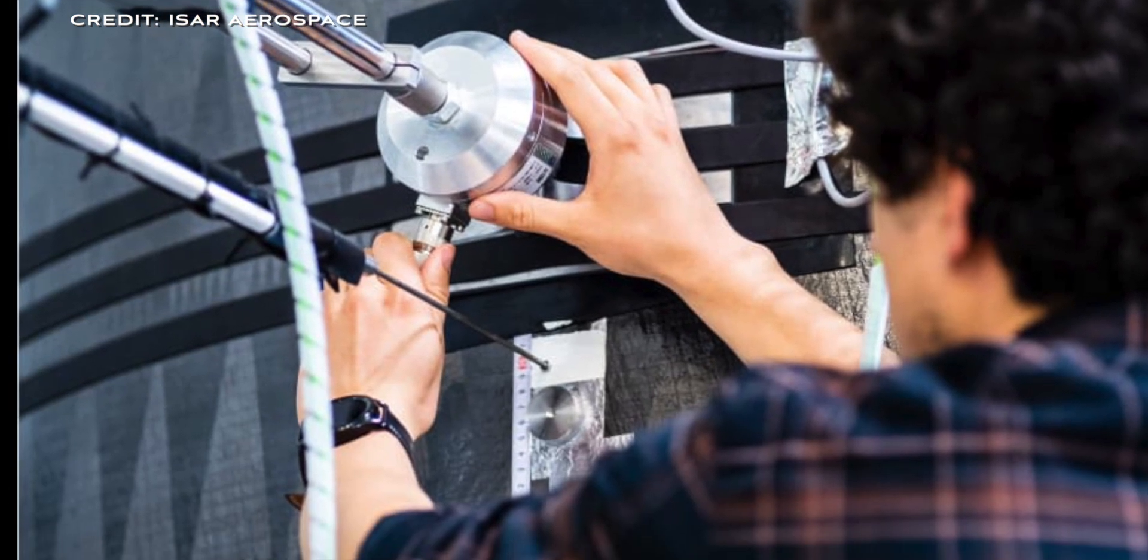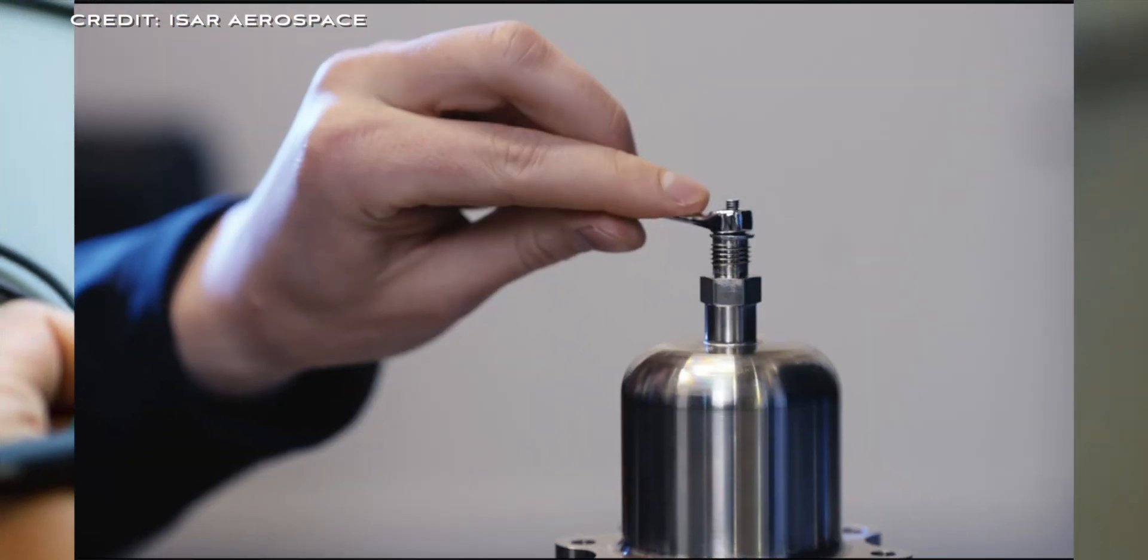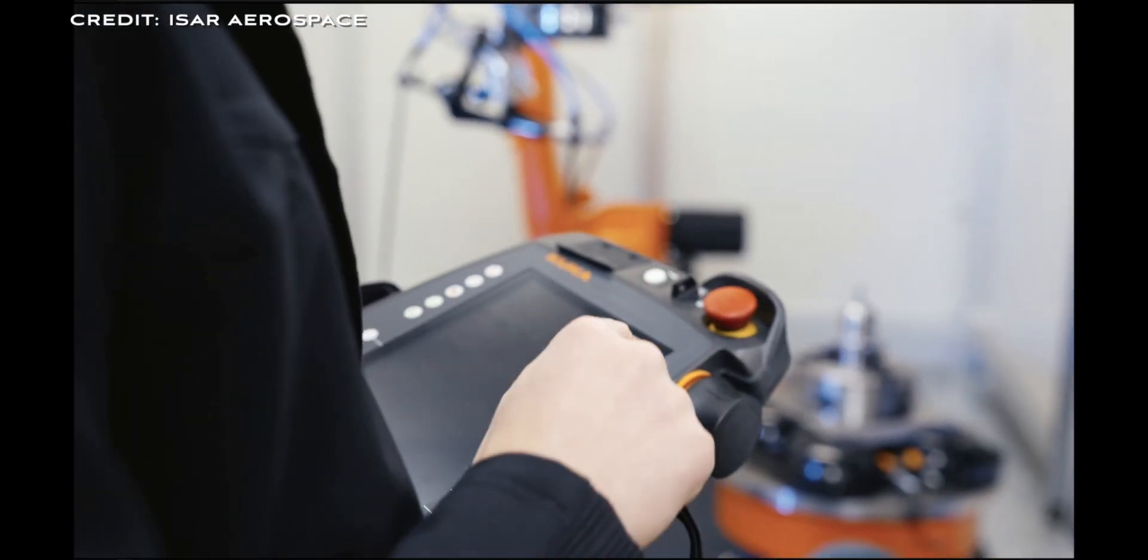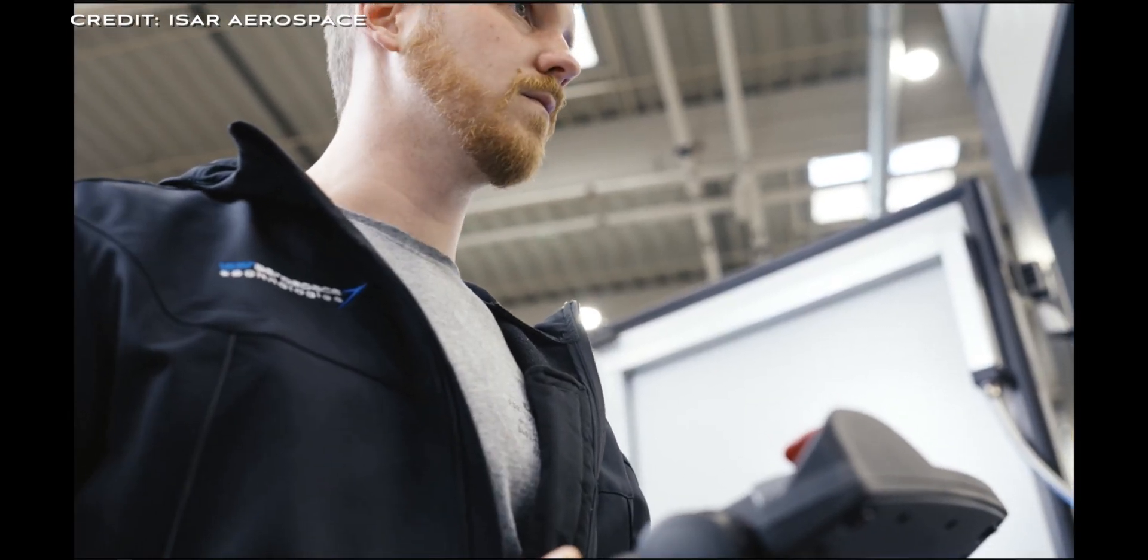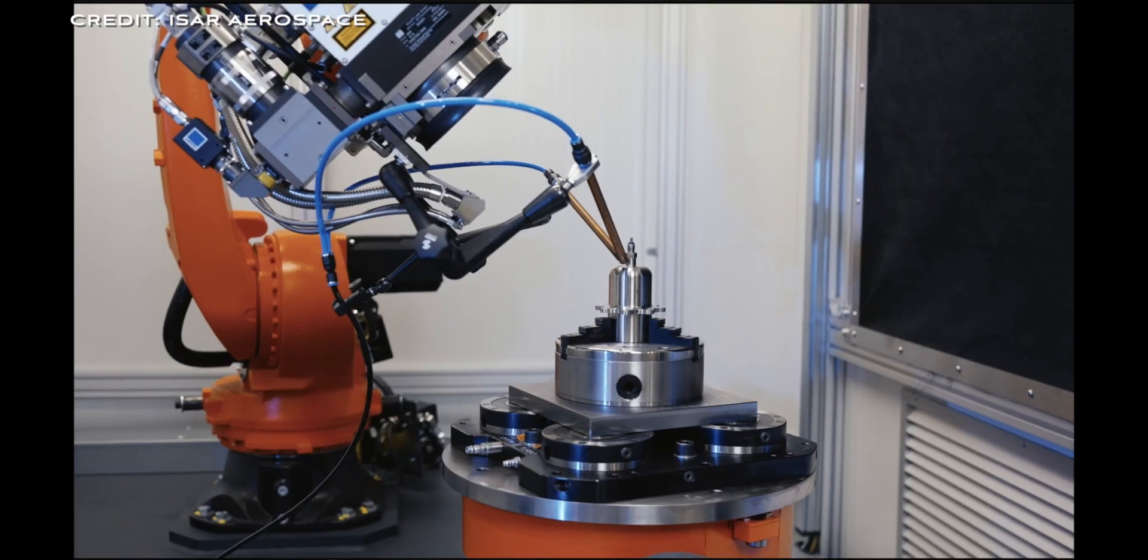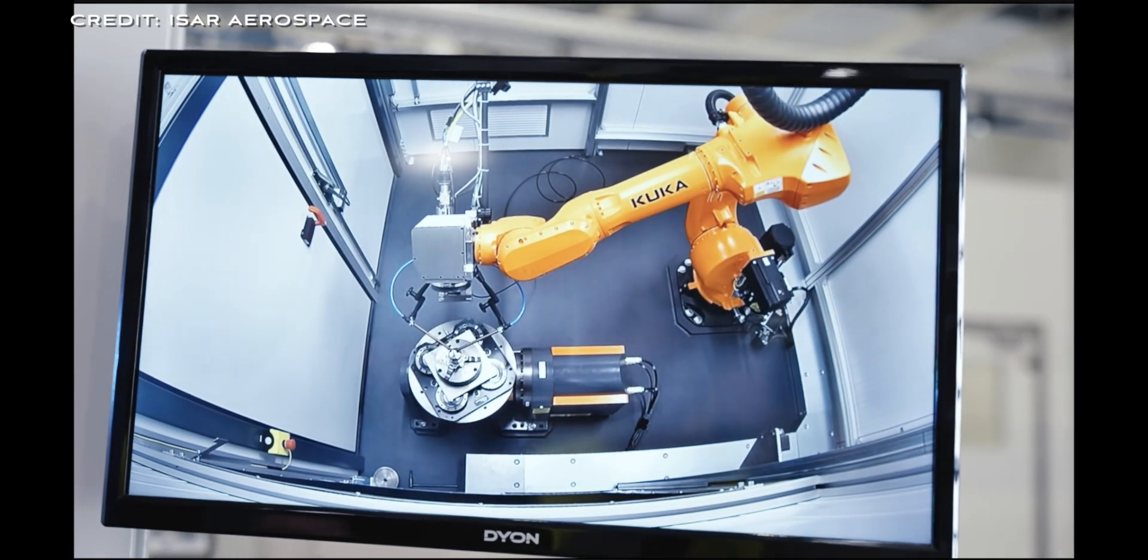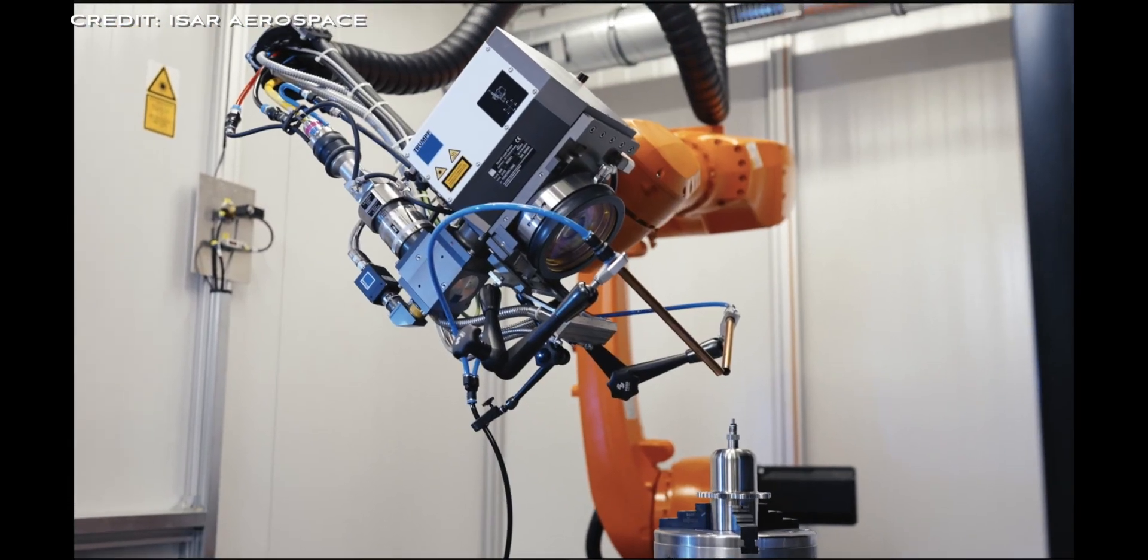The primary structure of the vehicle uses lightweight carbon composite structures. In addition, ISAR uses a great deal of automation in the manufacturing process, allowing for increased precision and efficiency in machining and welding. This process enables ISAR Aerospace to accelerate production while maintaining the highest level of accuracy.